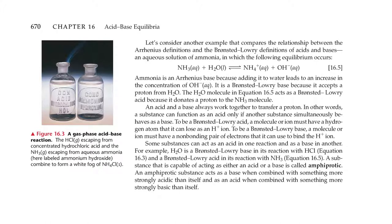Figure 16.3 shows a gas-phase acid-base reaction: hydrochloric acid gas escaping from concentrated hydrochloric acid and ammonia escaping from aqueous ammonia combine to form a white fog of ammonium chloride. Consider another example comparing Arrhenius and Bronsted-Lowry definitions: an aqueous solution of ammonia where NH3 + H2O → NH4+ + OH-. Ammonia is an Arrhenius base because it increases the concentration of hydroxide. It is a Bronsted-Lowry base because it accepts a proton from water. The water molecule acts as a Bronsted-Lowry acid because it donates a proton to ammonia. An acid and a base always work together to transfer a proton.